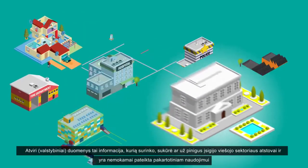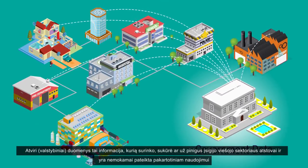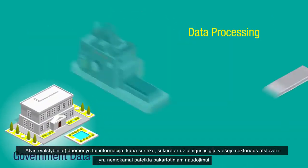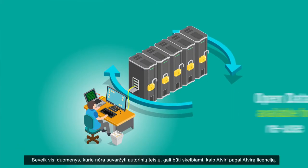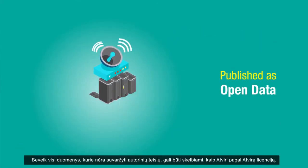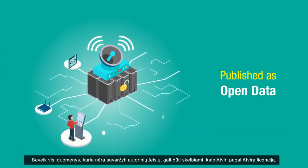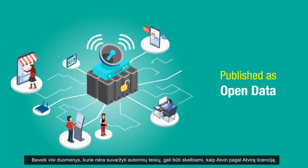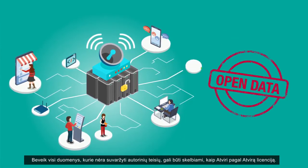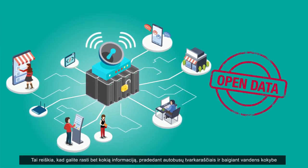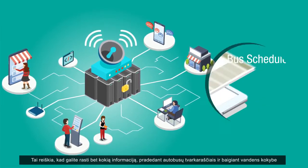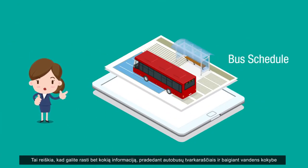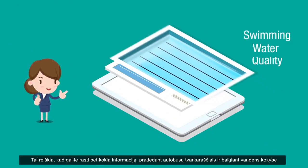Open Government data refers to the information collected, produced or paid for by the public bodies and made freely available for reuse. Almost all data which is not privacy sensitive can be published as open data with an open license. This means you can find information on almost all subjects such as the schedule of your bus or the quality of water.